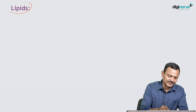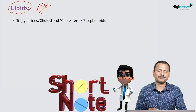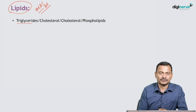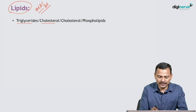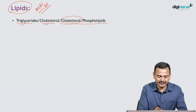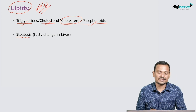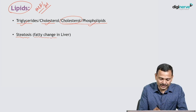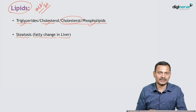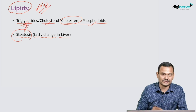After knowing the mechanism and the location, we now move on to specific substances. The first and important substance is lipids. Lipids can be in different forms: triglycerides, cholesterol, or phospholipids. The first form of deposit is steatosis — fatty change in the liver. What is deposited in steatosis is triglycerides, deposited in the liver.